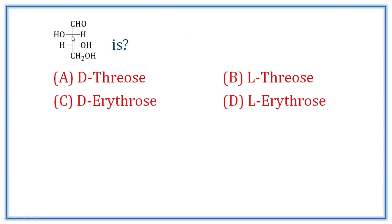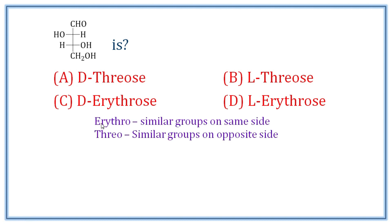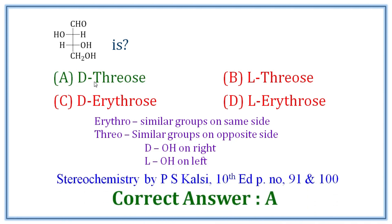Next question: a compound has the structure CHO, OH, H, HOH, CH2OH. What is this compound? This compound is a saccharide related to glyceraldehyde. If the hydroxyl group is on the right in the Fischer projection, it is D-glyceraldehyde; if on the left, it is L-glyceraldehyde. In this case, the hydroxyl is on the right, making it D-glyceraldehyde. The opposite side has the same group, confirming it is D-threose. The correct answer is D-threose.